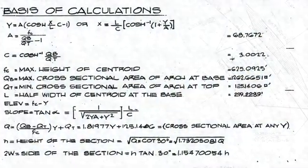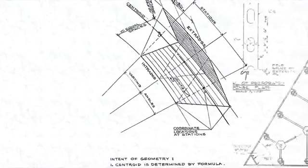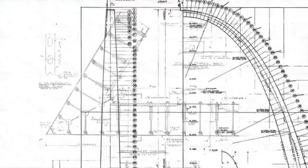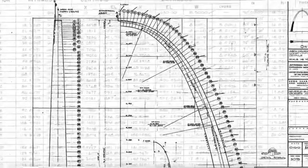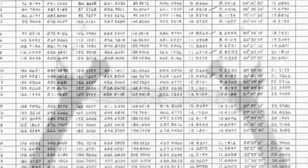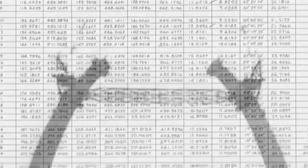So the architects and engineers took the mathematicians' equations and made drawings and great columns of numbers and took them to the steel makers and the construction crews.